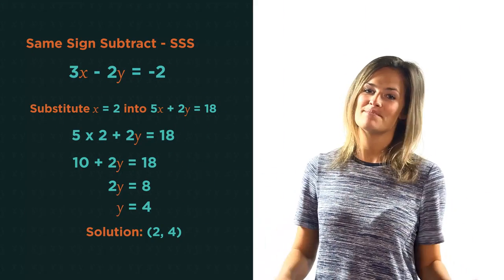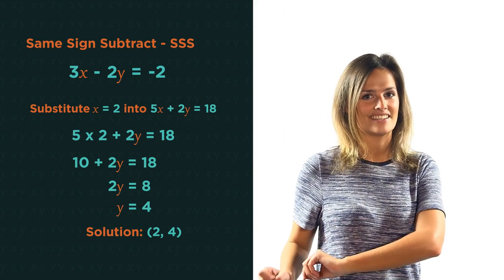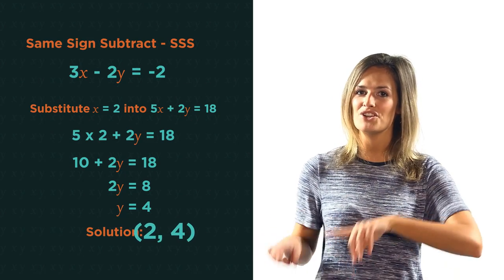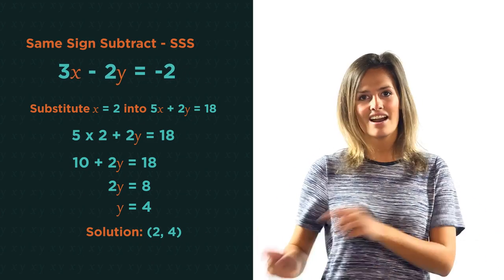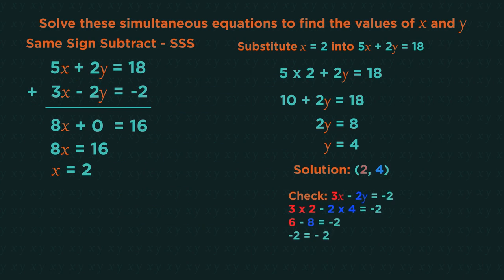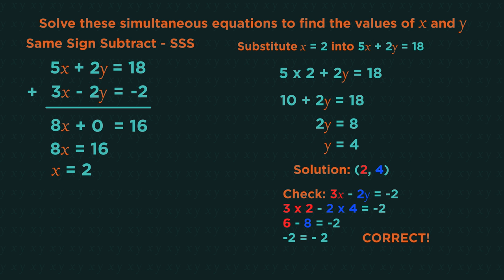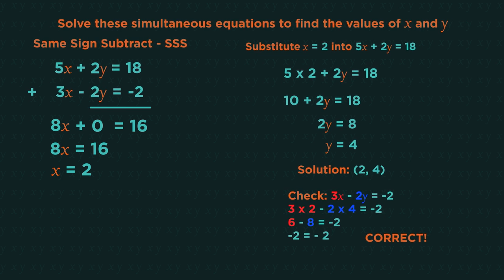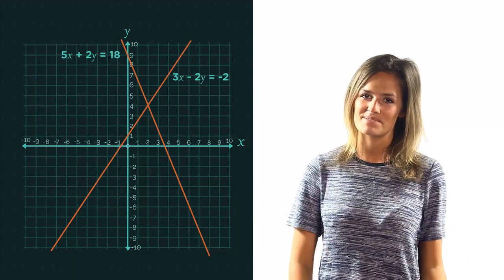It's then really important to check our answers. So we need to substitute 2, 4 back into the other equation. 3 times 2 minus 2 times 4 equals negative 2. So 6 minus 8 is negative 2, which is correct. That's all there is to it. Much faster than having to plot the graphs.